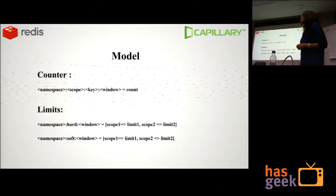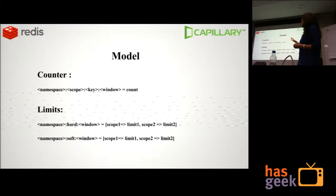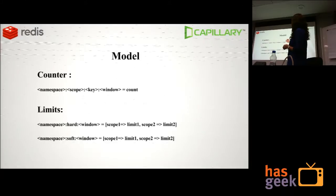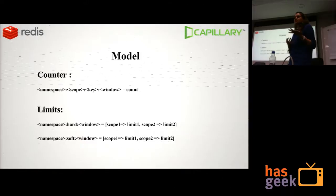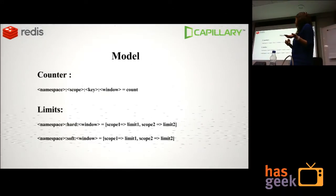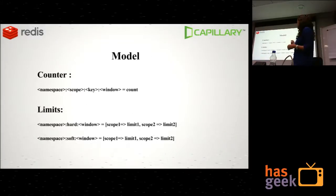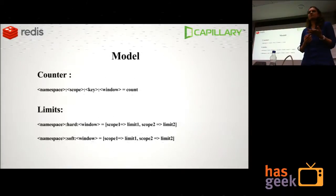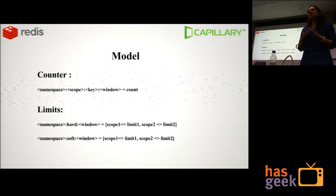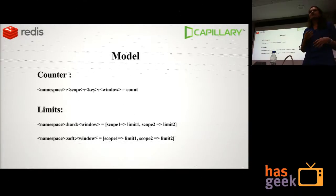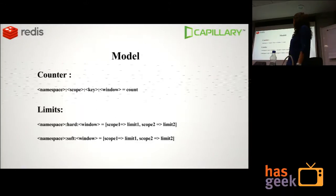The counter key is a combination of namespace, scope, key, and window, and we simply increment the count each time a new call is made. Soft limits are configurable — the user or organization can set whichever limit they want. Hard limits are just to avoid someone mistakenly setting a really high value. For example, in limits you can say: send only 5 coupons to a customer in a day, only one reminder message in an hour, or only 2 campaign messages in 4 or 5 hours.